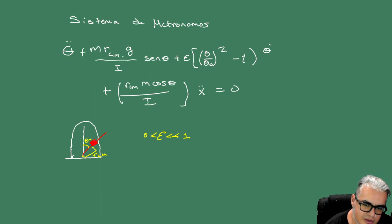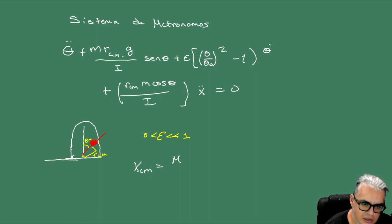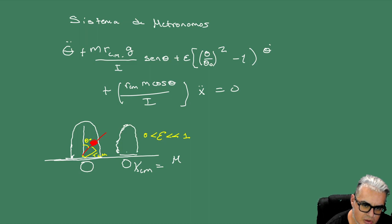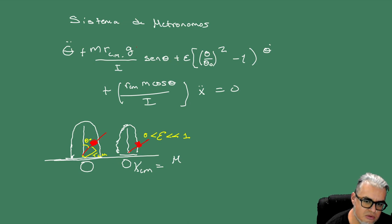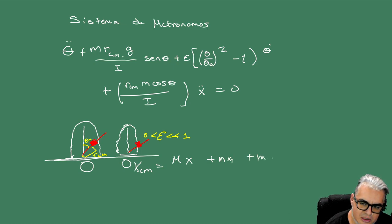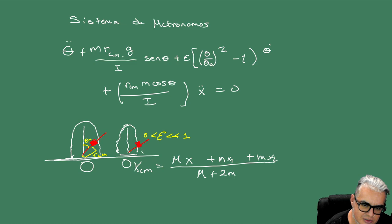La posición X respecto del centro de masa se puede calcular con la masa de la base. En el experimento teníamos una tabla delgada con unas latas para que rodara, y aquí teníamos el otro metrónomo. Los dos están en la misma frecuencia, nada más que el ángulo es distinto. Esta posición respecto del centro de masa es M por la posición, más M por la posición 1, más M por la posición 2, dividido entre la masa de la base más las dos masas de las pesas.